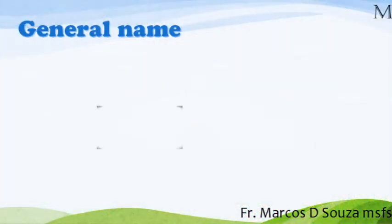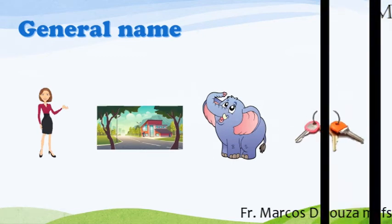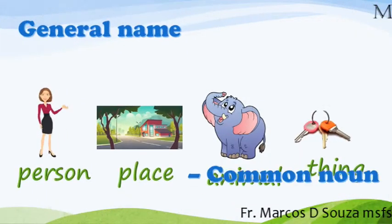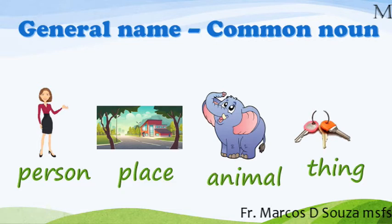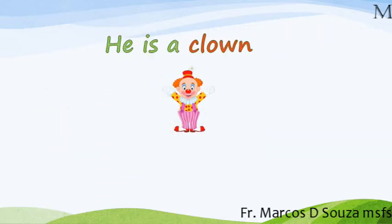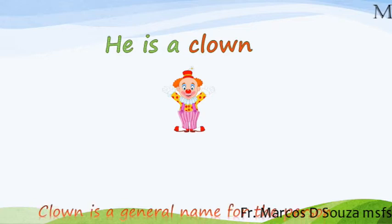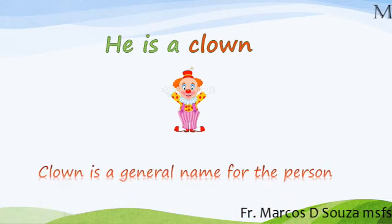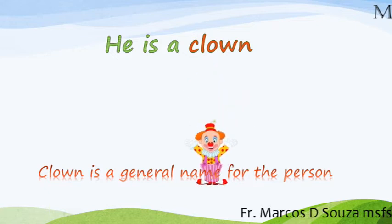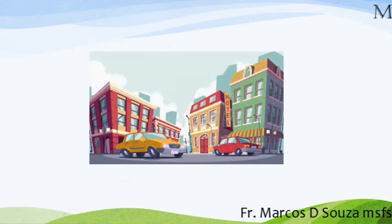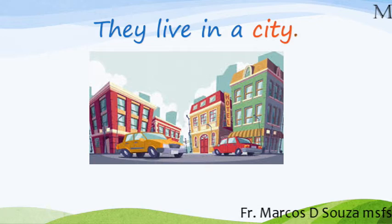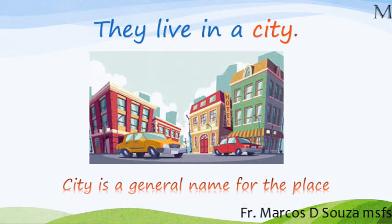The general name of a person, place, animal or a thing is a common noun. For example: He is a clown. In this sentence, we are talking about a clown. Clown is a general name for the person. They live in a city. In this sentence, we are talking about a city. City is a general name for the place.